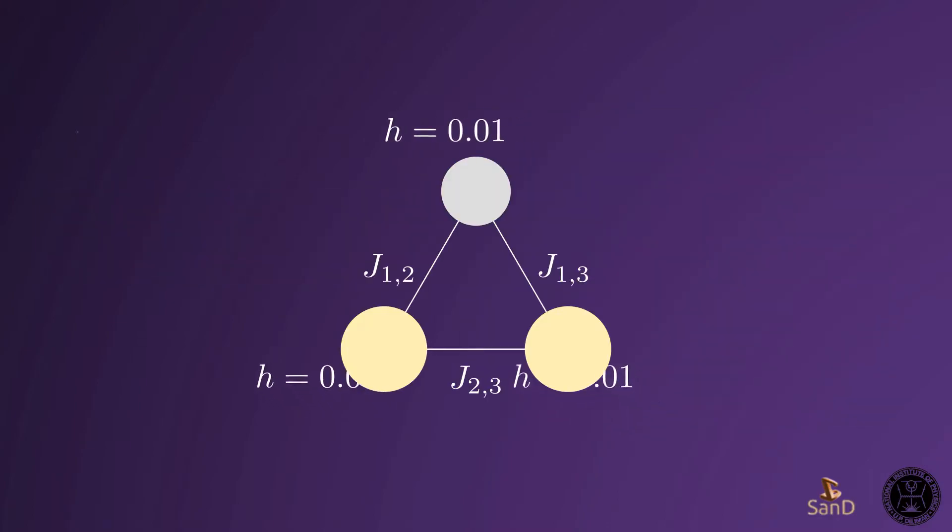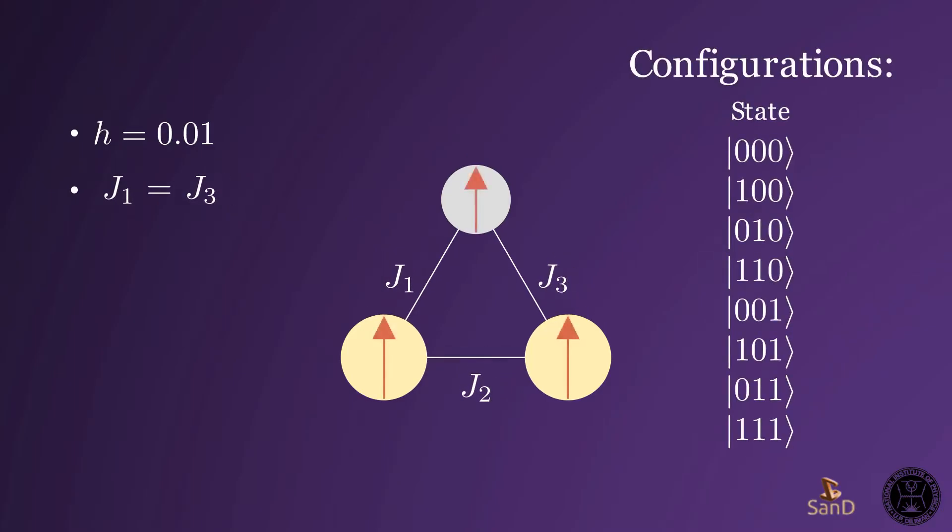In the system, we set H to 0.01 and simplify the coupling such that the first and third ones are equal for symmetry. We then determine which couplings are stable. Each configuration is denoted by spins, and in this study, we see how well our quantum circuit is able to predict the state with the lowest energy.